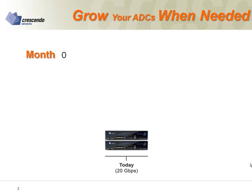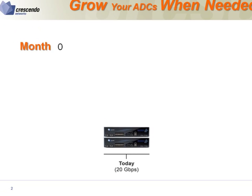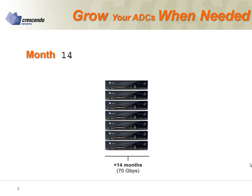Hyperscale allows you to grow your system over time as your customer demand grows. Here is an example. You might start out with a system of two units. Eight months later, your business has grown and you need more capacity — you simply purchase a third unit and add it to the Hyperscale system. Fourteen months later, your company is acquiring a competing company and you need to drastically expand your ADC capacity. Again, you simply purchase more units and add to your system.